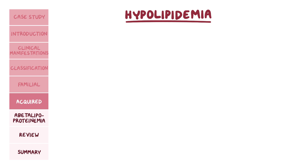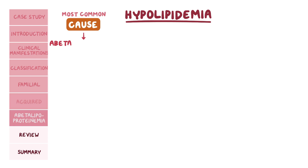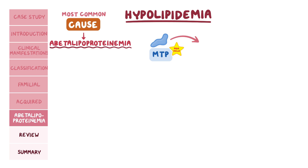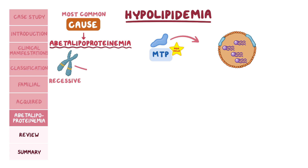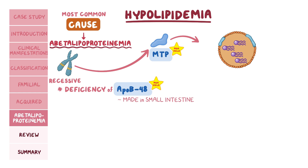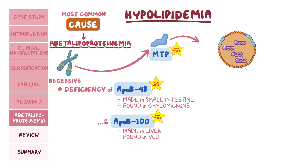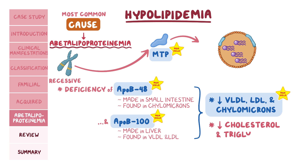Now let's look at hypolipidemia. The most common cause that will show up on your exams is abetalipoproteinemia. Normally, a protein called Microsomal Triglyceride Transfer Protein, or MTP, is responsible for packaging triglycerides into lipoproteins like VLDL and chylomicrons, so that they can be carried in the blood. In abetalipoproteinemia, an autosomal recessive genetic defect happens to the MTP protein. There's also a deficiency of ApoB48 protein, found in chylomicrons, and ApoB100, found in VLDL and LDL, so the result is low levels of VLDL, LDL, and chylomicrons. Both cholesterol and triglyceride levels will be low.